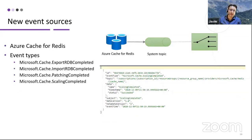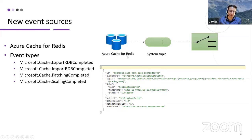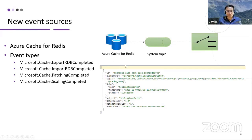The other new event source is Azure Cache for Redis. There are new event types you can now listen to, subscribe to, and react to. For example, when scaling of Azure Cache for Redis is completed, you can react — perhaps there's an extra step that needs to be done after scaling. This is one way to handle that, and we showed an example of that event.